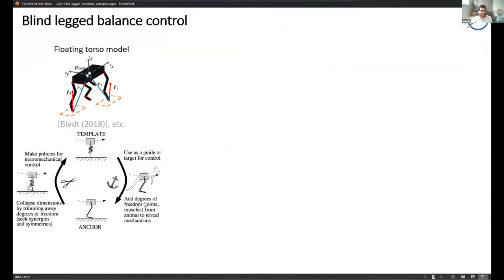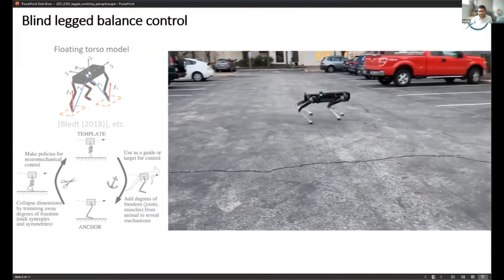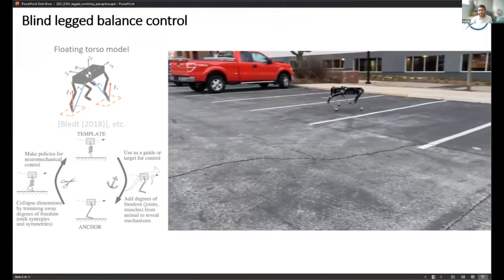We've already talked about using floating torso models where if the leg inertia is light then maybe that's sufficient to do the control of the body and stance. We do something similar for our robots as well.